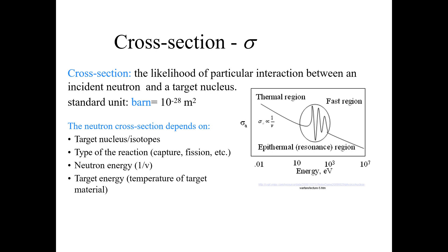The temperature of the target material also affects the cross-section. In this diagram, the cross-section is plotted against the energy of the incoming neutrons. You can see that the cross-section is inversely proportional to the energy of the incident neutrons striking the nucleus.